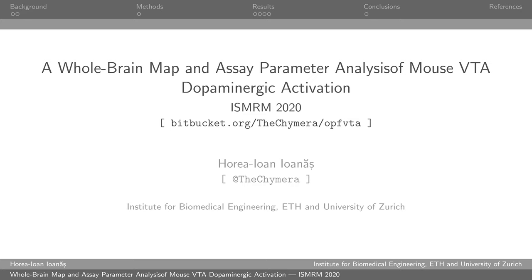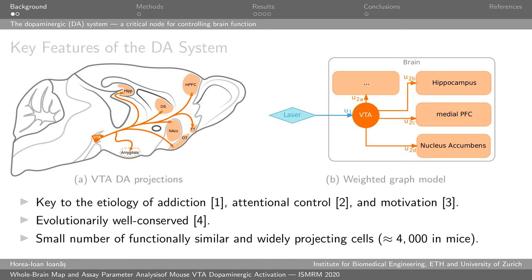In this e-poster we present a whole brain map and the associated assay parameter analysis for mouse brain VTA dopaminergic activation. The reason why the dopamine system is a particularly interesting target for modern neuroscience is that it is key to the etiology of very many phenomena of interest, which we currently do not have enough control over, but which many people — both patients and those in the healthy spectrum — are interested in controlling. These include addiction, attentional control, and motivation, among many others.